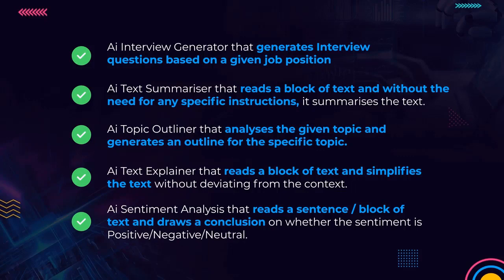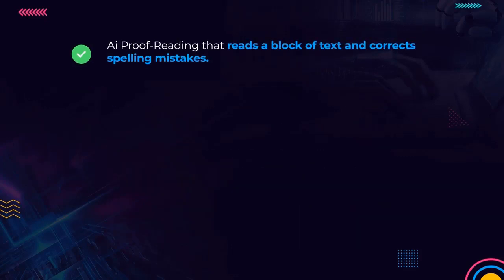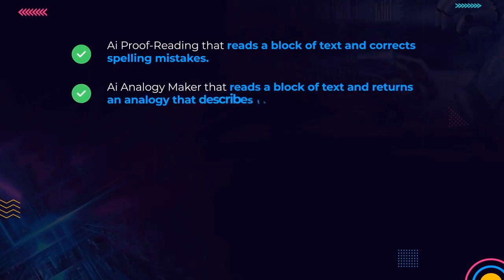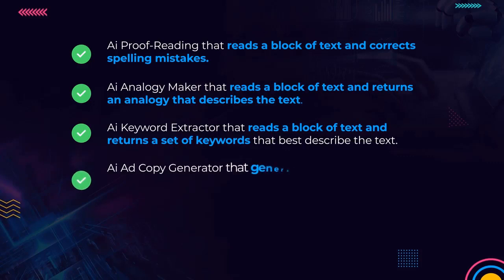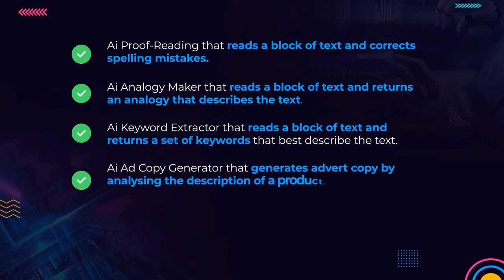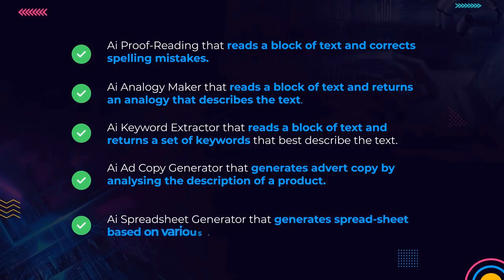Positive, negative, or neutral. An AI proofreading tool that reads a block of text and corrects spelling mistakes. An AI analogy maker that reads a block of text and returns an analogy describing it. An AI keyword extractor that reads text and returns keywords that best describe it. An AI ad copy generator that creates advert copy by analyzing a product description. An AI spreadsheet generator that generates spreadsheets based on various sorts of data.